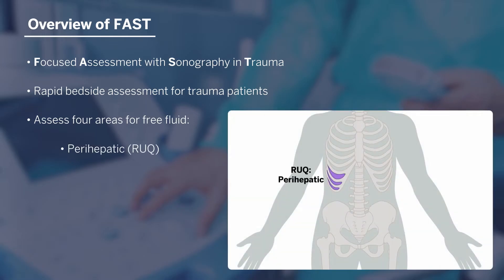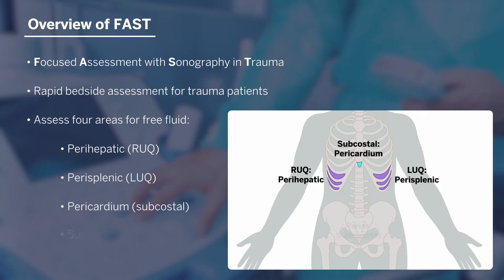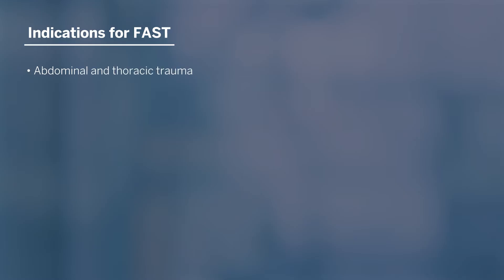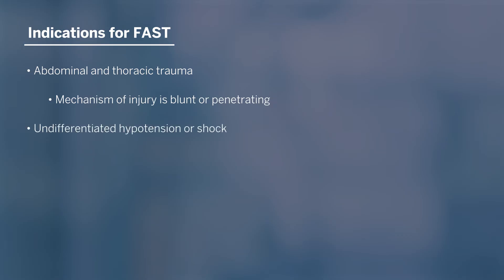Those four regions are the peri-hepatic, perisplenic, pericardium, and suprapubic areas. The indications for performing a FAST exam are very broad, and its use should be considered in all abdominal and/or thoracic trauma situations where the mechanism of injury is blunt or penetrating in nature. Patients presenting with undifferentiated hypotension or shock should also undergo a FAST exam as part of their workup.